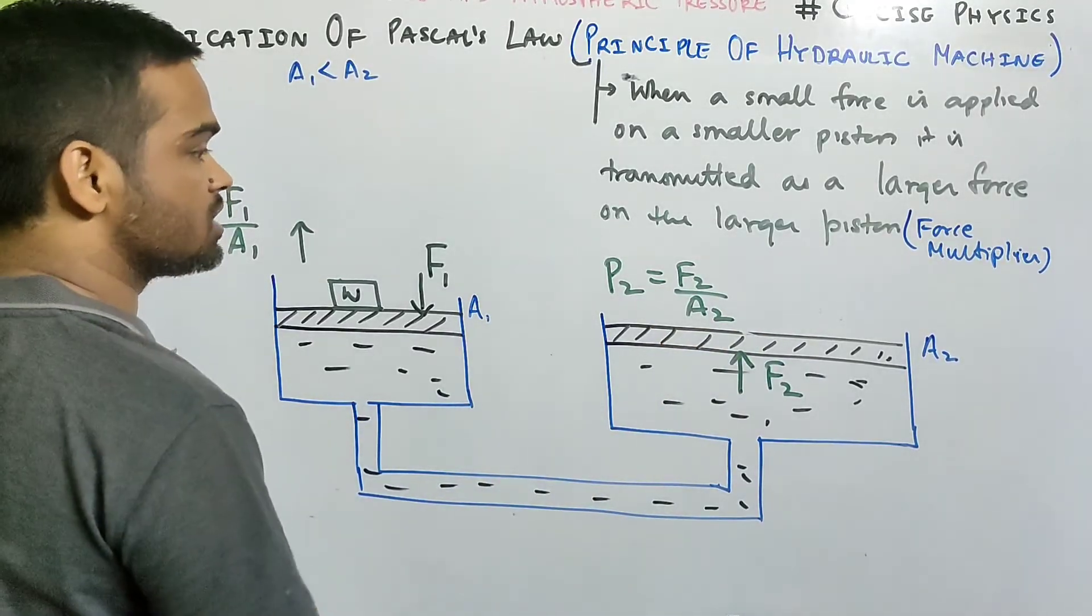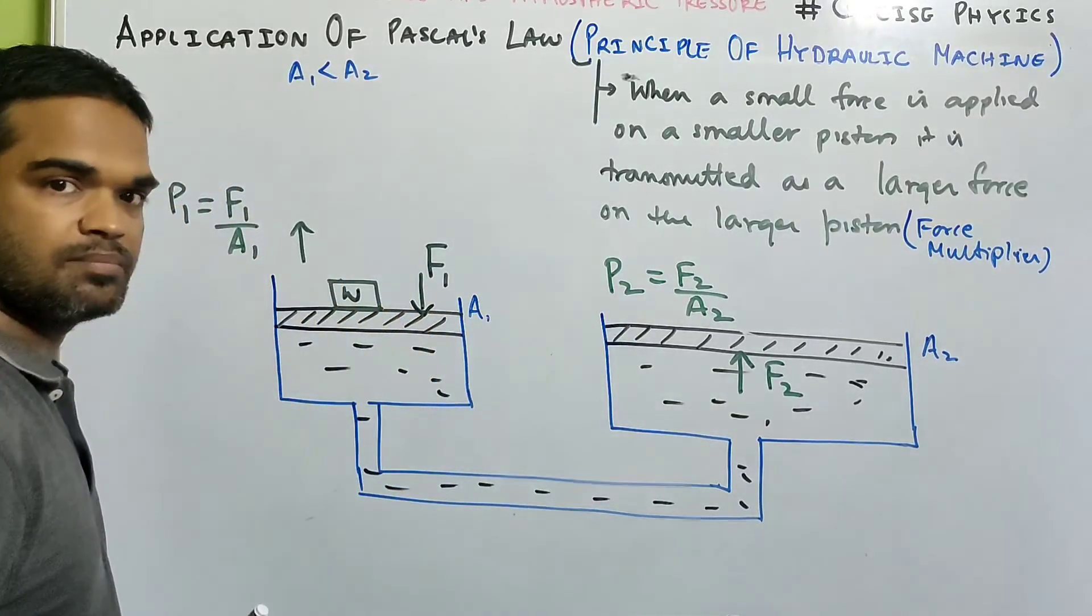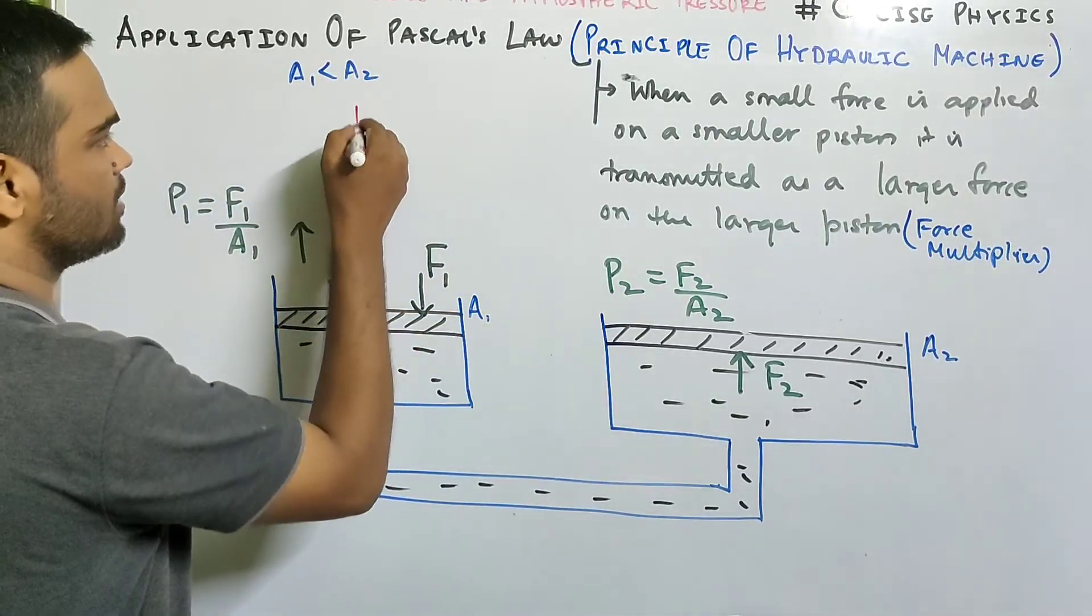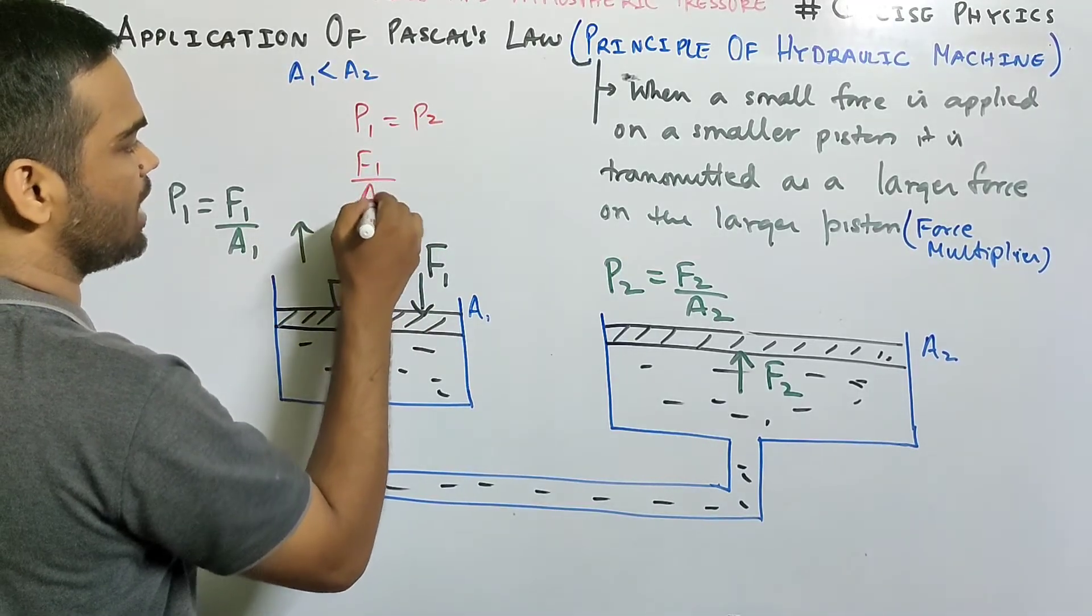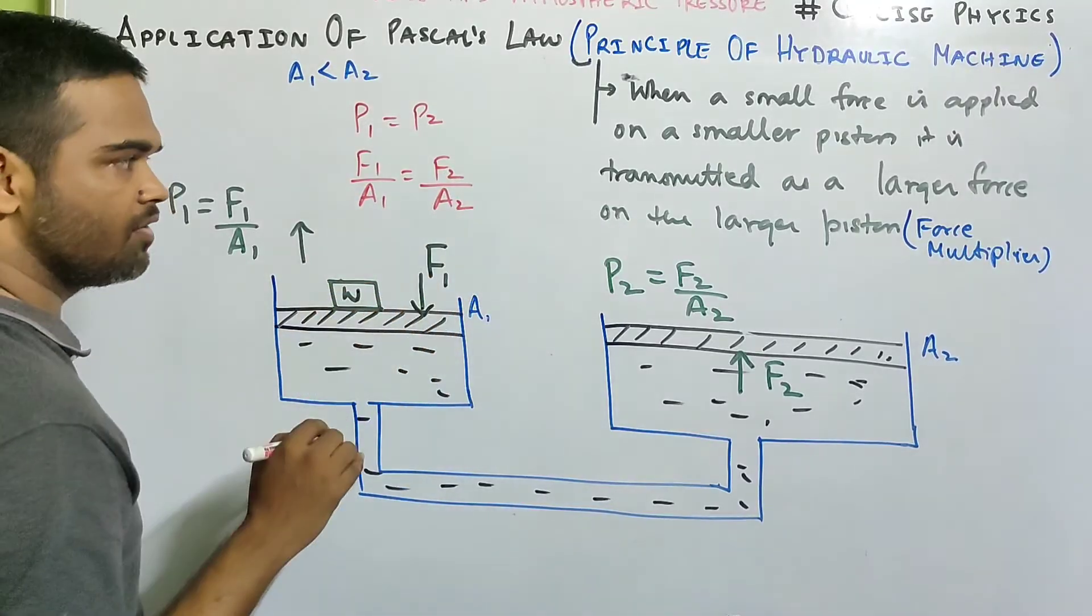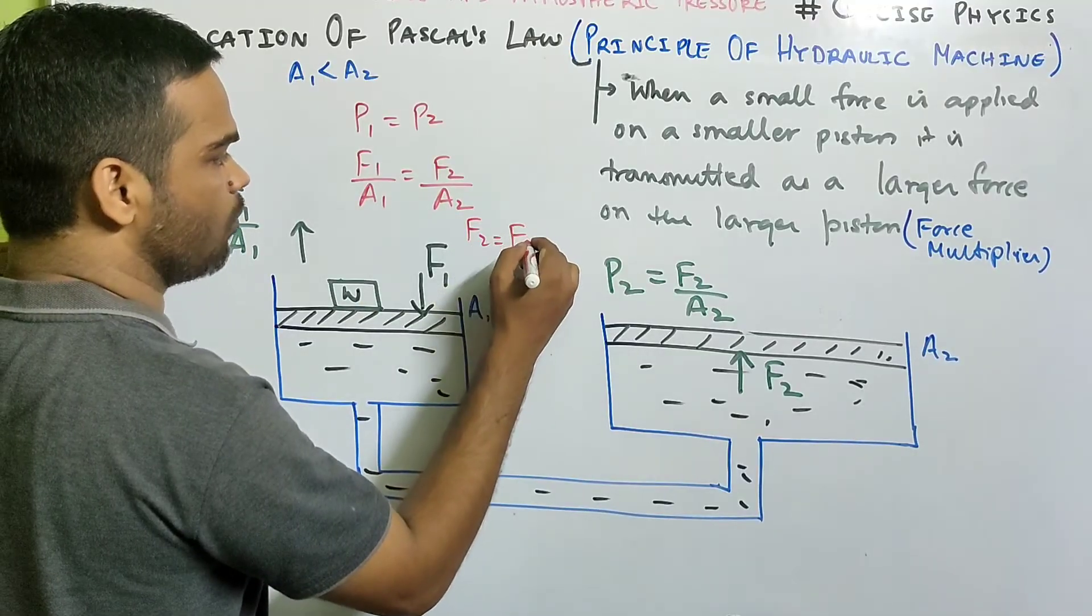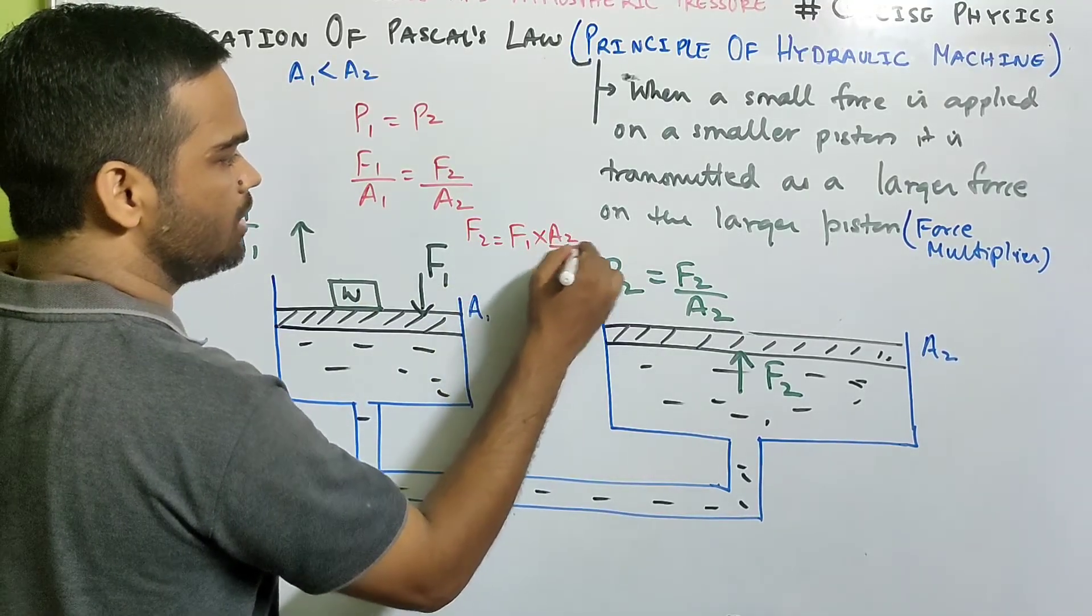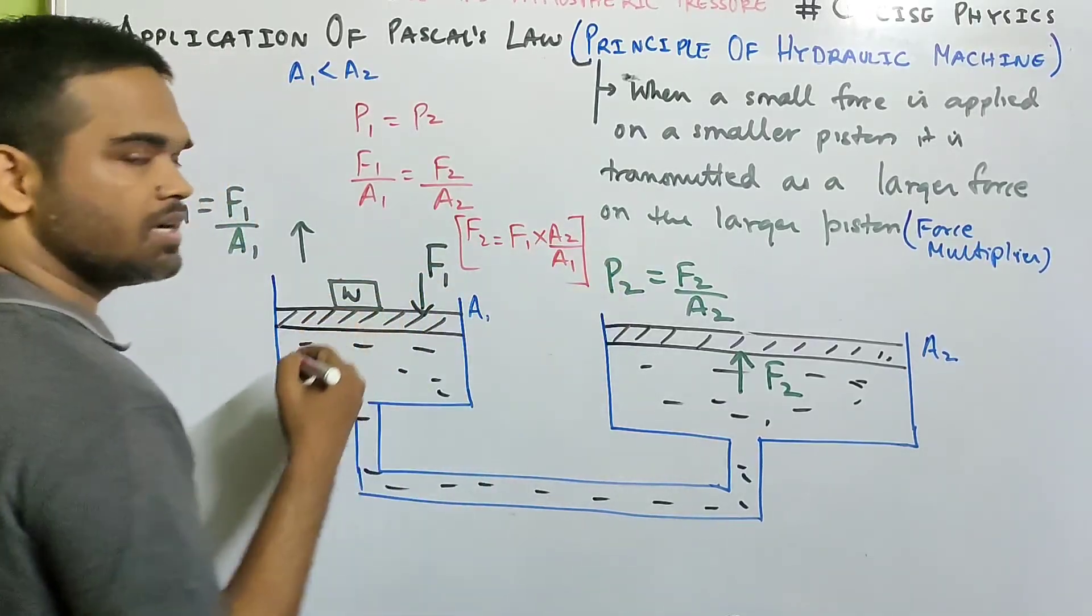Now Pascal's law states that these two pressures will be same. So can I write p1 equals to p2, which means f1 by a1 is equal to f2 by a2. Now look carefully. So what is f2? f2 will be f1 into a2 by a1.